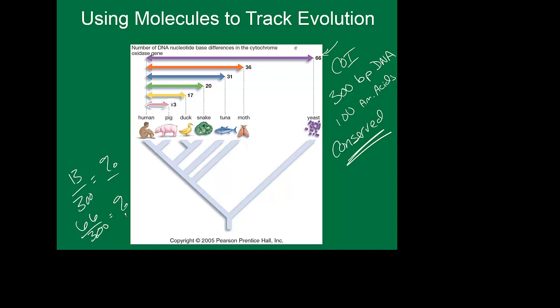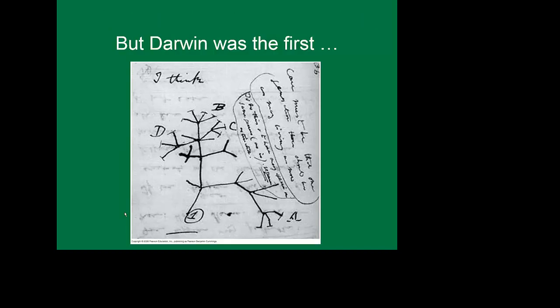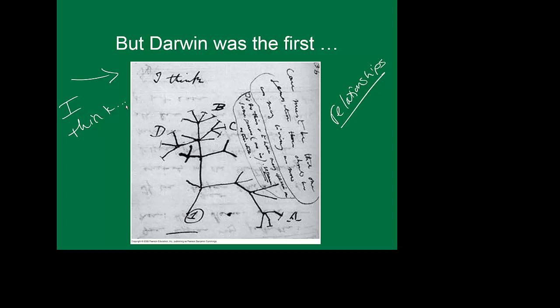These are what we refer to as phylogenetic trees, or evolutionary trees. Darwin was actually the first to suggest this — this tree or branching structure gives you an idea of relationships. That's all we're doing: forming relationships. Darwin writes, 'I think.' He knew nothing of DNA, nothing of how the underlying molecular processes worked, but he did know that somehow we're all related on a big old family tree.